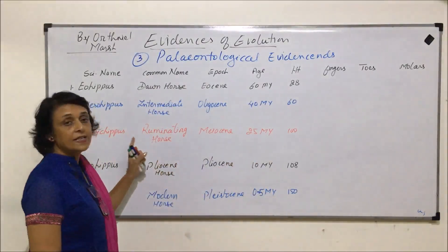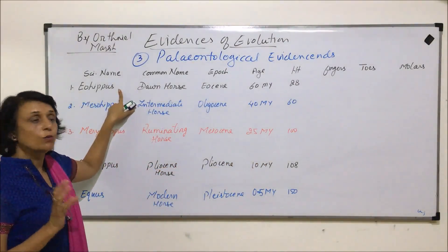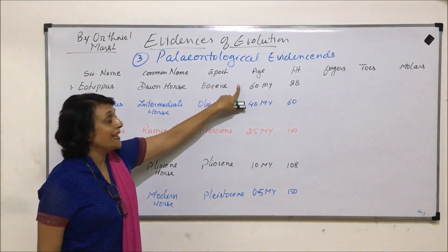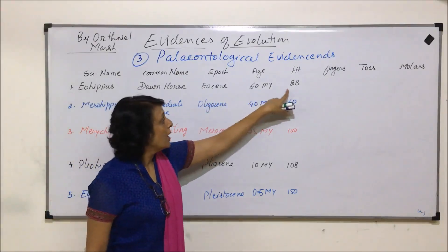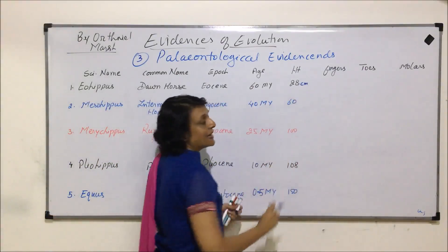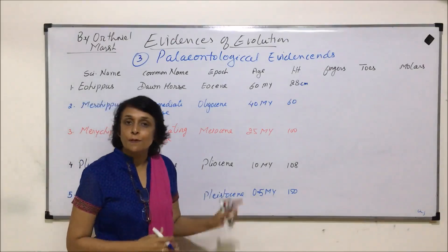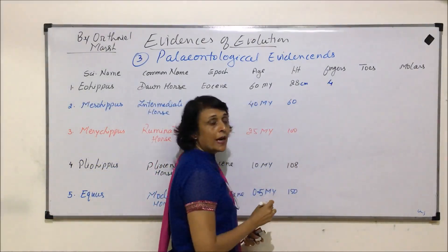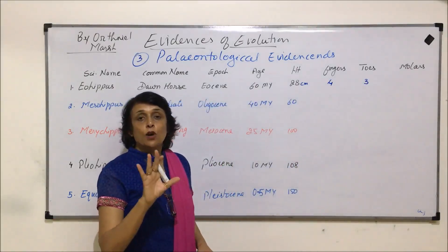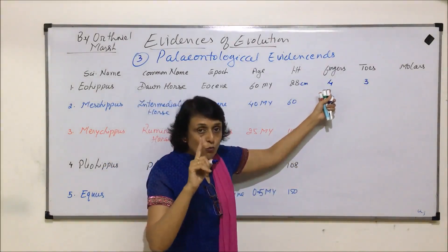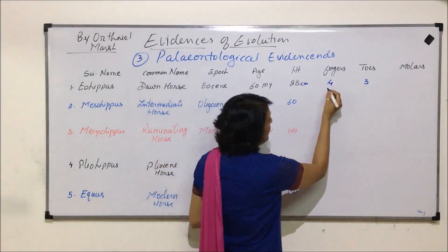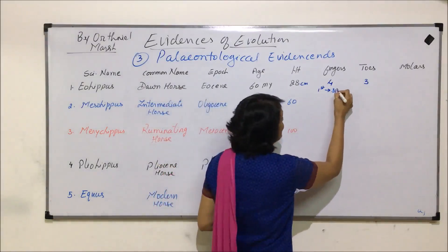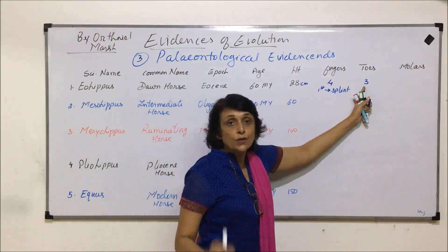The first fossil found was of Eohippus, whose common name is Dawn Horse. It was found in the Eocene epoch, existed about 60 million years ago, and had a height of approximately 28 centimeters. Regarding fingers, there were four functional digits — one must have reduced, specifically the first digit, which was reduced into a very small structure called a splint bone.